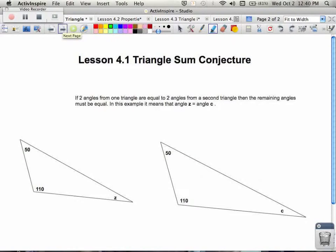In our second slide, what we know is that if two angles from one triangle are equal to two angles from a second, then the remaining angles have to be equal. So in this particular slide we can see that